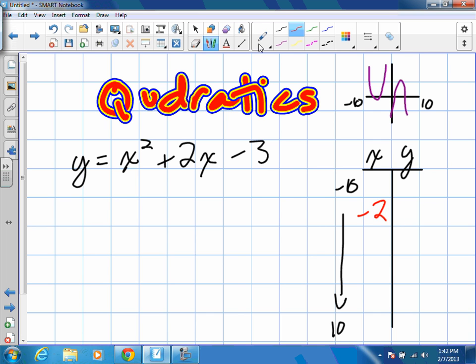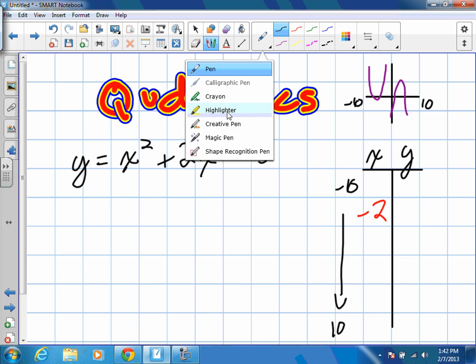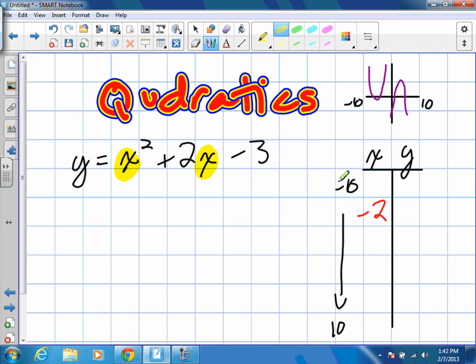Now, this time, when I plug in, because there are two x values, we have to plug negative 2 in for both of them. So, y is equal to negative 2 squared plus 2 times negative 2 minus 3. Now, I'm going to go through this much quicker, because I assume you guys are relatively strong with your integers after doing that stuff.